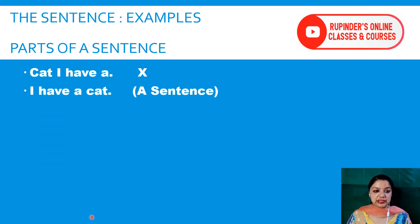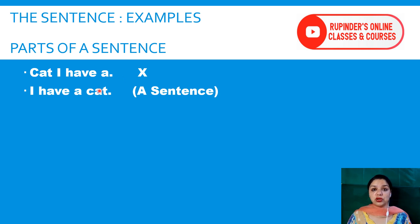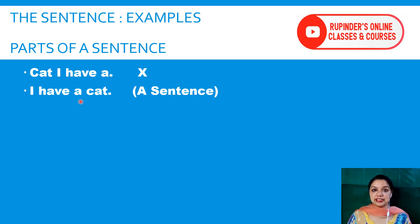Look at the screen here. 'Cat, I have' — this is just a group of words, that is why a cross has been put here. It is not conveying any meaning. Now look at the next line: 'I have a cat.' Does it make some sense? Yes, it is conveying the meaning, and this is a sentence.